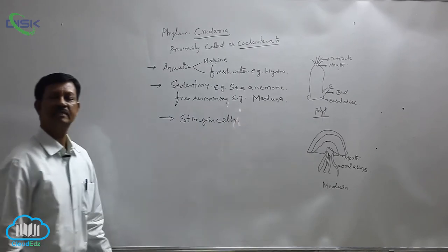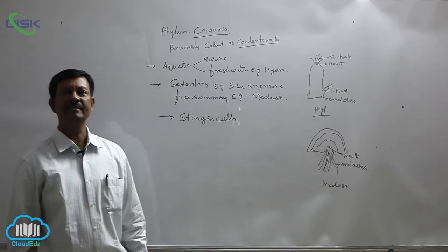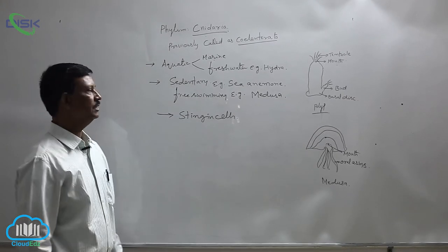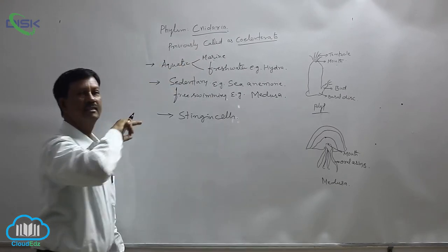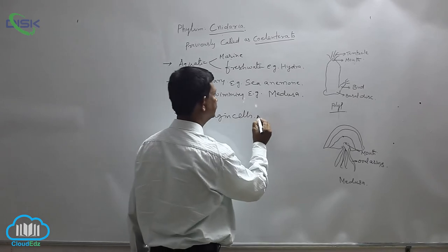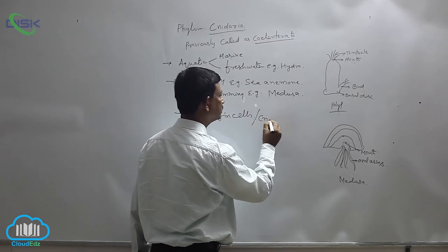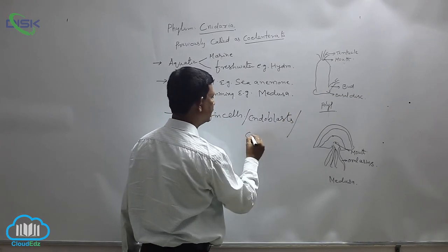Special types of cells are present in this Phylum. They are not found in any other Phyla. Due to the presence of stinging cells, the Phylum name is derived as Nideria. Stinging cells are also known as Nidoblasts or Nidocytes.